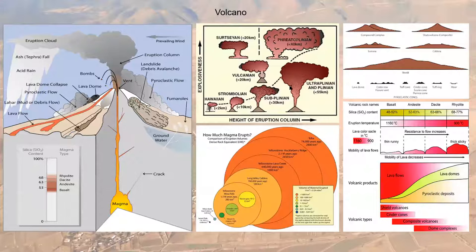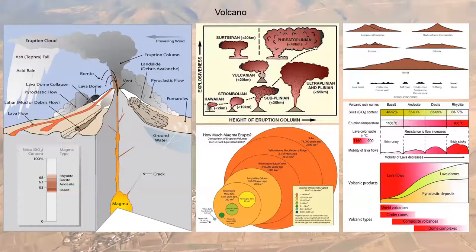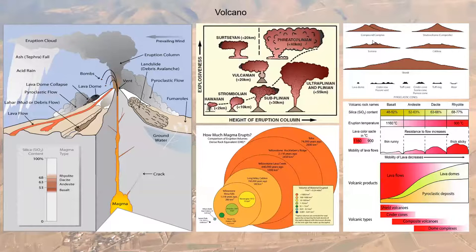There are different types of volcano morphologies. A stratovolcano is built up of lava flows and ash particles. A compound complex has two overlapping structures. Sometimes you have a caldera morphology with a dome inside. And shield volcanoes are the most quiet and gigantic volcanoes on our planet, mostly associated with basaltic, very fluid magmas.